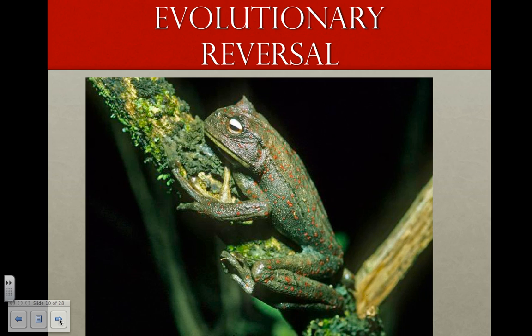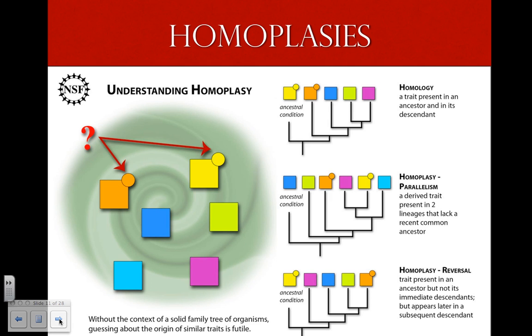For example, frog ancestors had teeth in the lower jaw. Today's frogs lack those teeth, but one genus of frog has regained those teeth. Convergent evolution and evolutionary reversal cause traits that are similar for reasons other than common ancestry. Such traits are homoplasies.